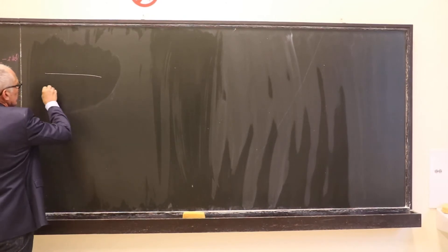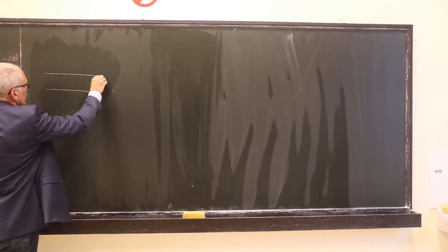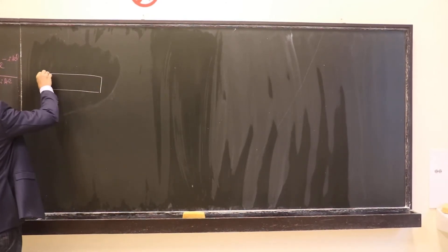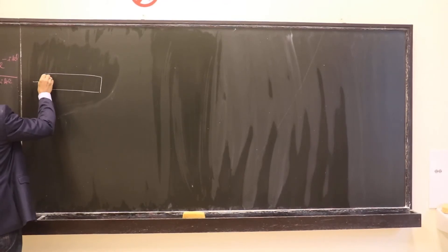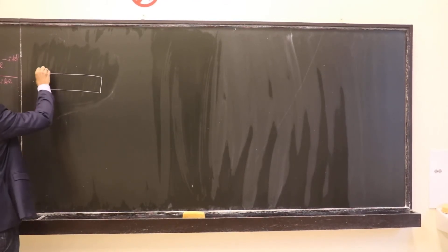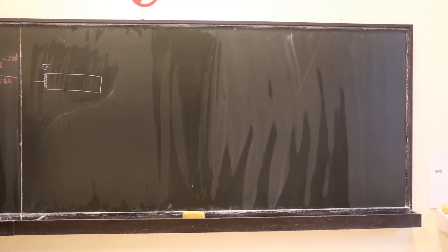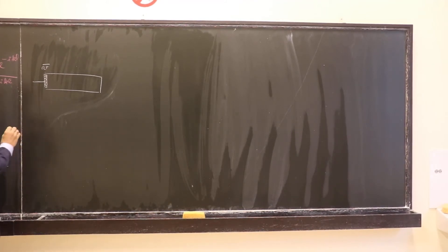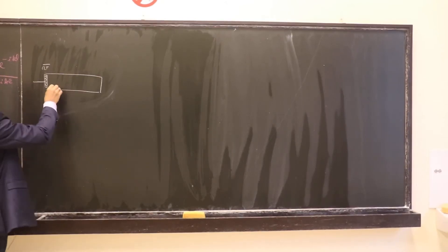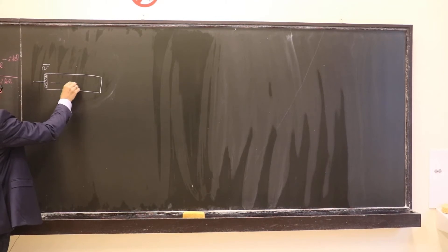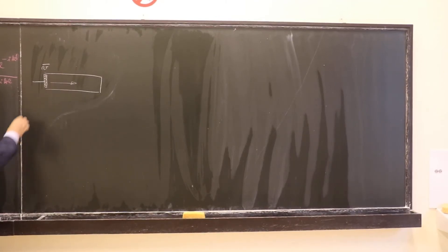Let's consider a simple system made of a duct closed on the right-hand side and excited on the left-hand side by a piston that oscillates at a velocity v. We suppose furthermore that we have a one-dimensional sound field, so that the value of the pressure only depends on the x coordinate.